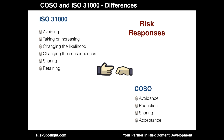The next difference focuses on risk responses. As COSO does not consider potential events with positive consequences as risks, it does not cover a risk response for taking or increasing the risk, which is covered within ISO 31000. Another difference is that instead of highlighting the reduction response as in COSO, ISO 31000 covers two risk responses: changing the likelihood and changing the consequences. As ISO covers events with negative or positive consequences, sometimes you may want to increase or reduce likelihood and consequences, and hence the word 'changing' is used instead of 'reducing.' So ISO 31000 provides a much broader list of potential risk responses compared to COSO.